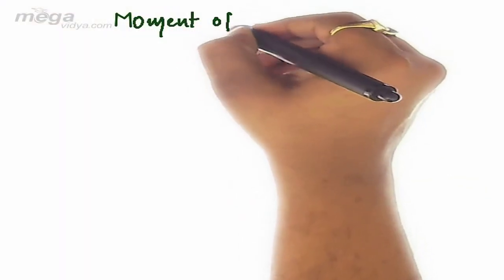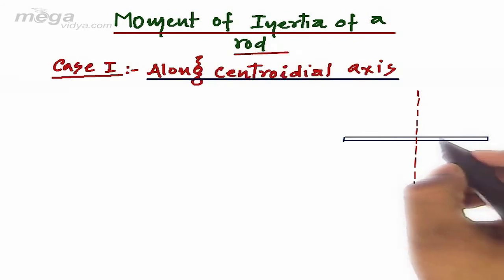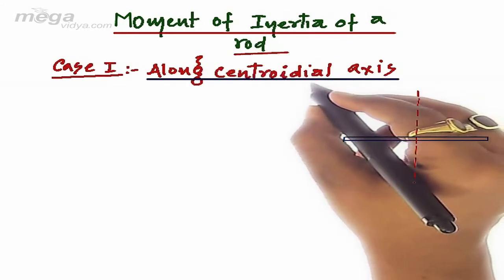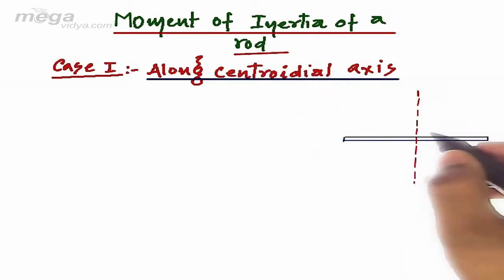The moment of inertia of a rod along the centroidal axis. Centroidal axis basically means the axis passing through the center and perpendicular to the plane.